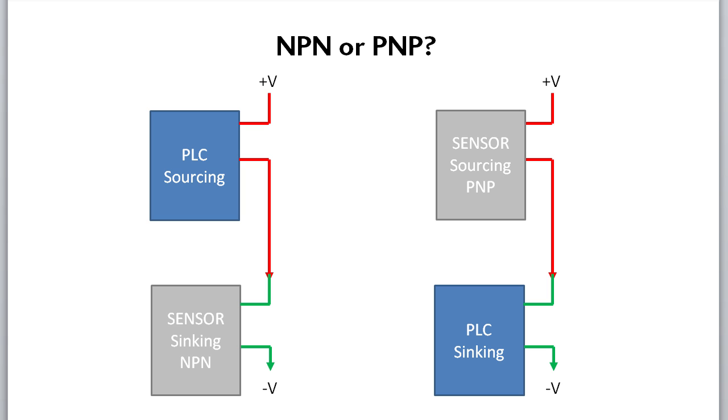If the sensor is sinking current to the negative supply, then it is NPN – think of N for negative. If the sensor is sourcing current from the positive supply, then it is PNP – think of P for positive.